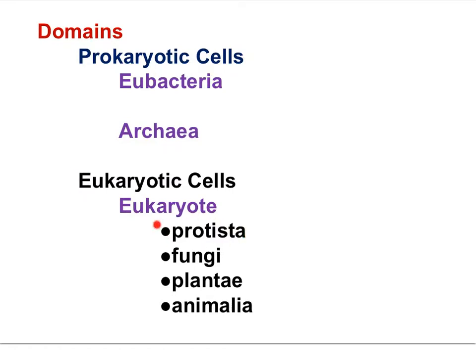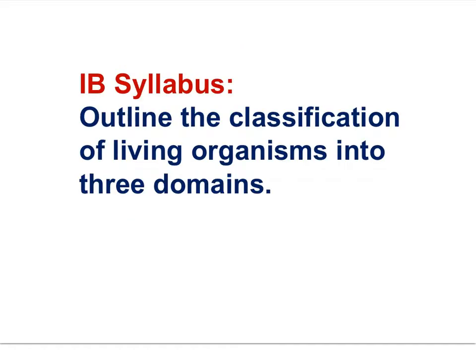The eukaryote domain includes the protists, like amoeba or the malarial parasite; fungi, such as yeasts and mushrooms; plants; and animals. Remember that viruses are not classified as living organisms. The IB syllabus statement is: outline the classification of living organisms into three domains — bacteria, archaea, and eukaryote.